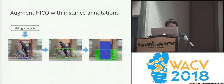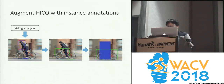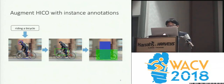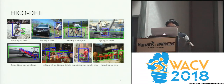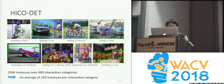For the benchmark, we augment the HICO dataset with instance annotations. We take the existing images and labels from HICO, annotate the people and objects with bounding boxes, and connect the person to the object described by the label. We call this new benchmark HICODET. Like HICO, HICODET is featured by its scale — we labeled 150,000 instances over 600 interaction categories, an average of 250 instances per category.